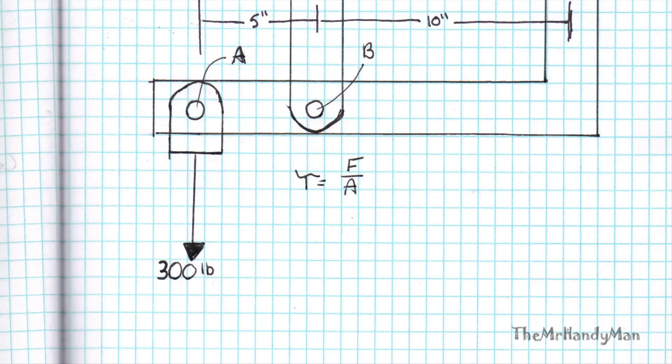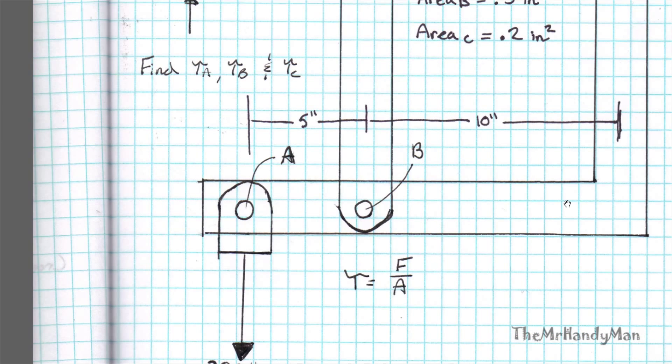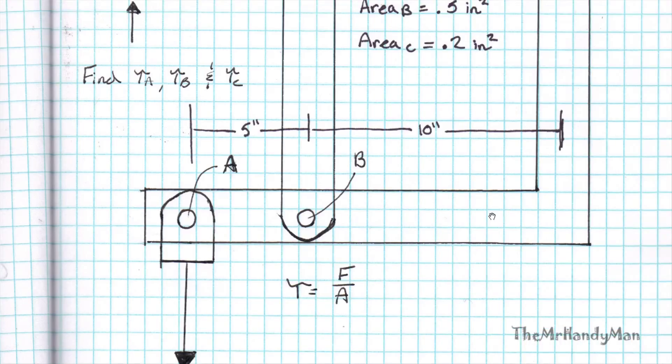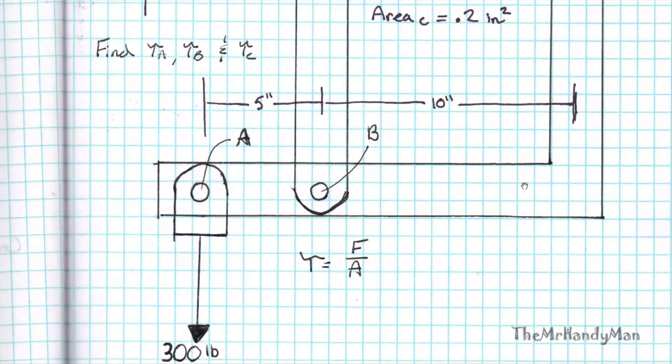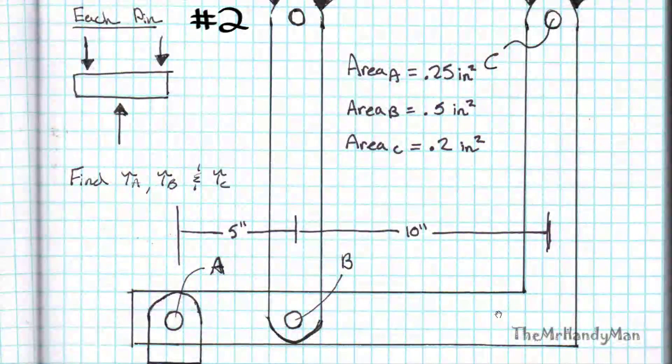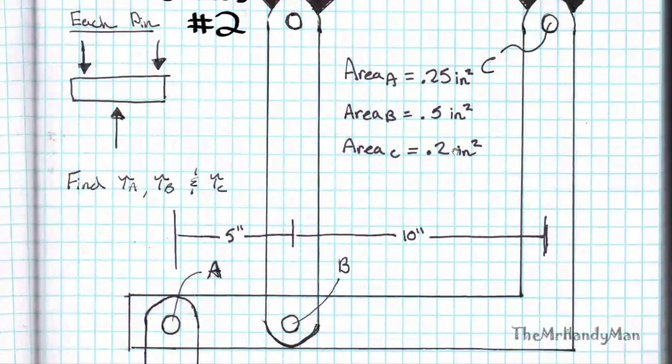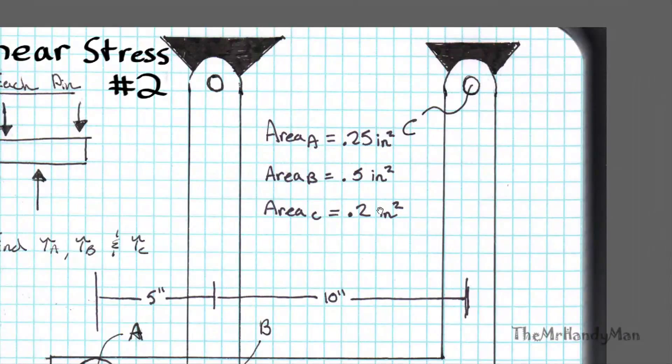Let me just zoom in here. You have a 300-pound force acting on this mechanism, which is just a basic beam type problem. I give us areas of the different pins that are utilized at basically the key points that we're going to be referencing: A, B, and then C up at the top.